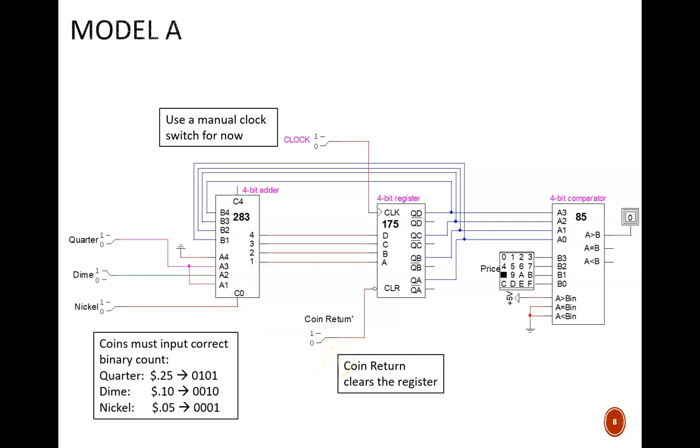Third, a coin return switch has been added down here. This is to meet the specification that the user can request their money back. If they do so, this will clear the state memory to 0 cents.